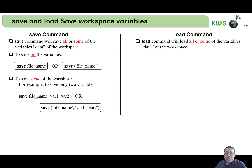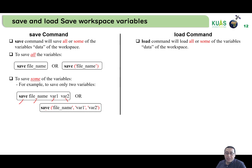For saving some of the variables — for example, if we have many variables and only need to save two — variable one and variable two — there are two ways. The first is: save, file name, variable one, variable two separated by spaces. The second is: save('file name', 'variable one', 'variable two') using parentheses and quotation marks.